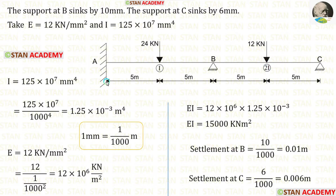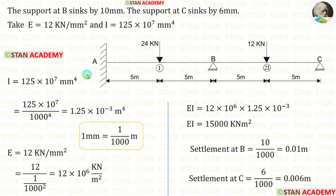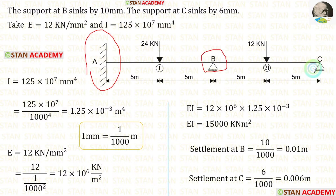The length of span AB is 10 m, and the length of span BC is also 10 m. At point A, there is a fixed support. At points B and C, there are hinged supports.